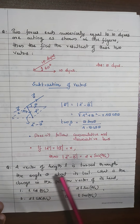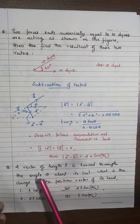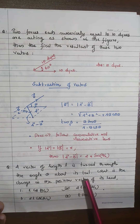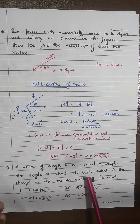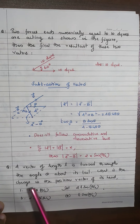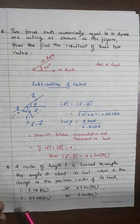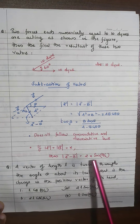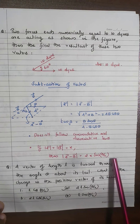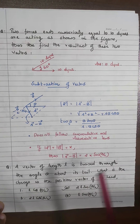A sample question: a vector of length L is turned through an angle θ about its tail. What is the change in the position vector of its head? The answer is 2L sin(θ/2).